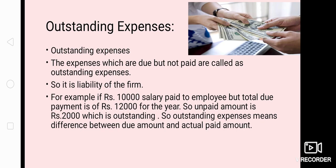The second slide shows outstanding expenses. We have seen prepaid expenses; now we are reading about outstanding expenses. So what are outstanding expenses? They are expenses that are due — meaning they need to be paid — but have not been paid. The expenses belong to the current year, but payment was not made in the current year. That is your current year expenditure — expense but not paid. It is due in the current year but not given, not paid. So it is a liability of the firm in the current year.